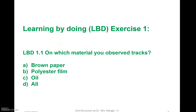Before discussing tracking further, I would like to ask you another question. You have already performed this experiment and are now preparing for your oral examination. On which material did you observe tracks in your lab — was it brown paper, polyester film, oil, or all of them? I already told you that tracks are observed very easily in transparent material; otherwise you need a microscope. So on brown paper, no — you cannot observe tracks and treeing. We have used polyester film in our lab.